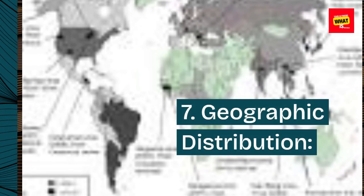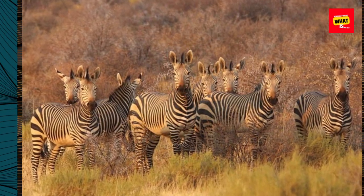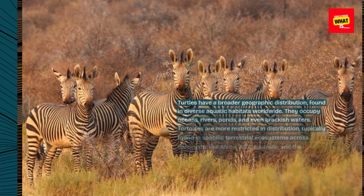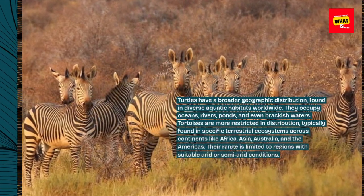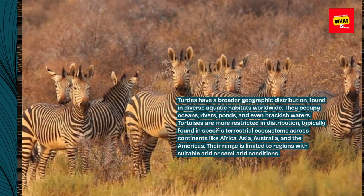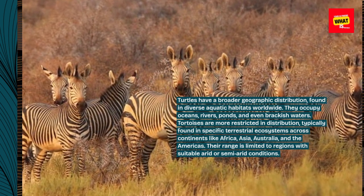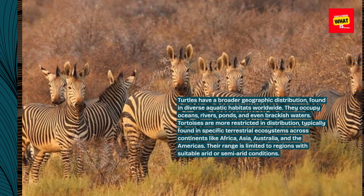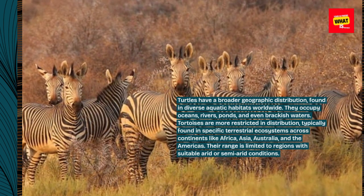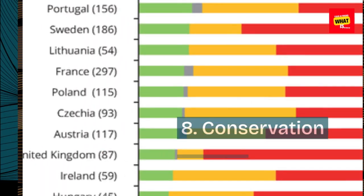Geographic Distribution: Turtles have a broader geographic distribution, found in diverse aquatic habitats worldwide. They occupy oceans, rivers, ponds, and even brackish waters. Tortoises are more restricted in distribution, typically found in specific terrestrial ecosystems across continents like Africa, Asia, Australia, and the Americas. Their range is limited to regions with suitable arid or semi-arid conditions.